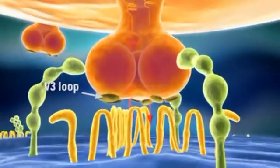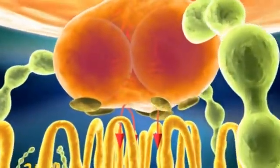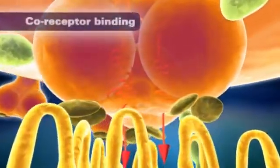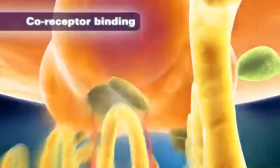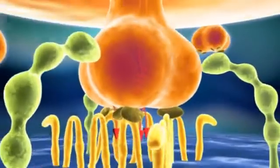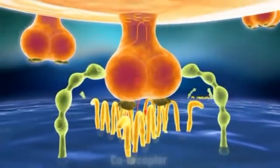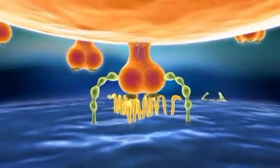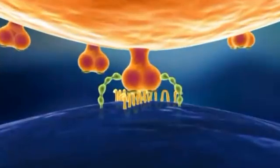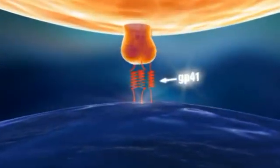Next, GP120 undergoes a conformational change, which allows it to bind to a second receptor, or co-receptor, on the host cell surface. Binding to the co-receptor is critical to the virus, as without this event, HIV cannot enter the cell.